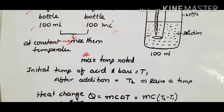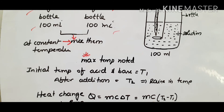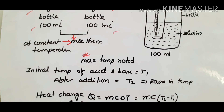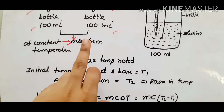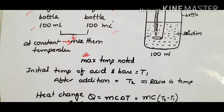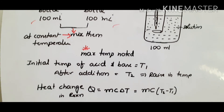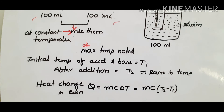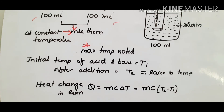Here, m is the mass of the acid-base solution. c is the specific heat capacity of the solution, which is assumed to be the same as that of water. The solution is the combined acid-base solution.